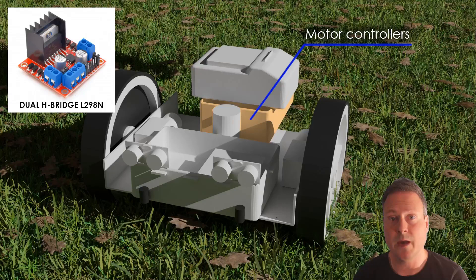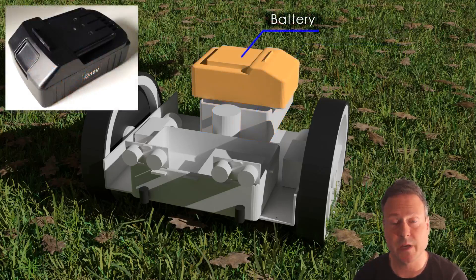Below the battery I placed two dual H-bridge L298N motor drivers to drive the wheel and cutting motors. Each bridge can control two motors and you control the motor speed with PWM signals from the Arduino.